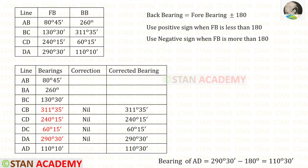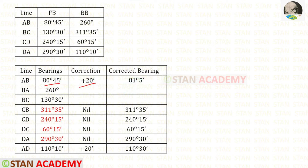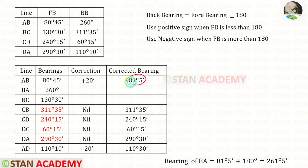Let us enter that. Now let us find how much correction is required for AD: 110 degrees 30 minutes minus 110 degrees 10 minutes gives us 20 minutes. We get a positive value, so the correction is positive 20 minutes. Since bearings AB and AD are taken from the same station A, the same correction should be applied to AB also. When we apply the correction we get 81 degrees 5 minutes for AB, and the corrected backbearing BA becomes 261 degrees 5 minutes. Let us enter that.